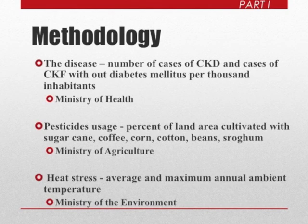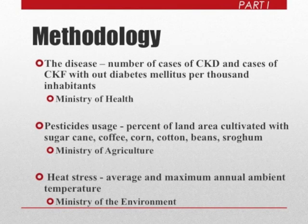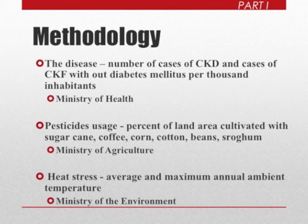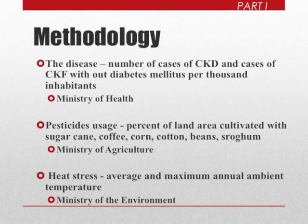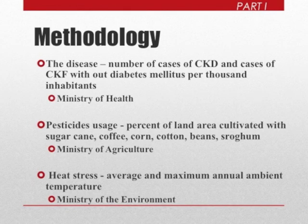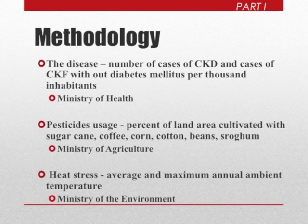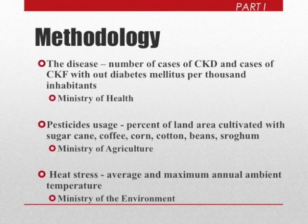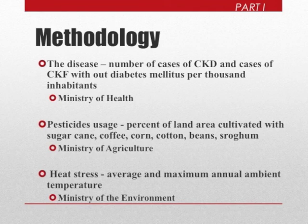The methodology includes information on the number of cases of CKD and CKF among people who do not have diabetes mellitus, per inhabitant. This data was obtained from the Ministry of Health of El Salvador. We also have information about the percentage of land cultivated with different crops: sugarcane, coffee, corn, cotton, beans, and sorghum. We investigate the correlation between these illnesses and crop cultivation, basically as an indicator of pesticide use.